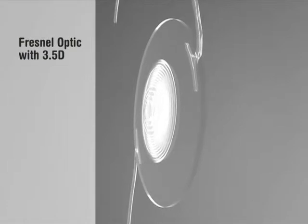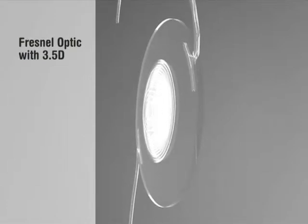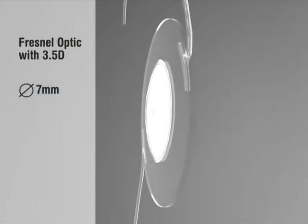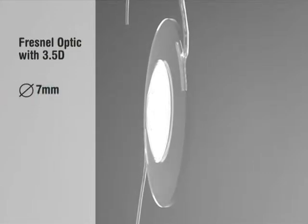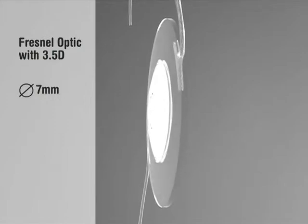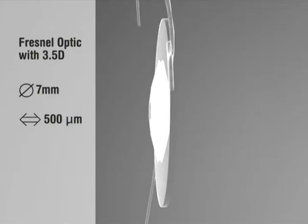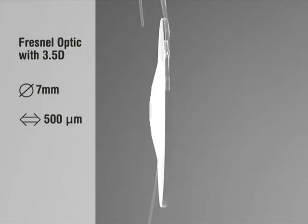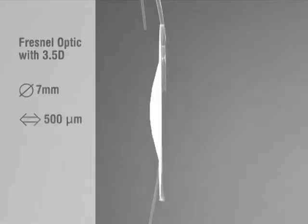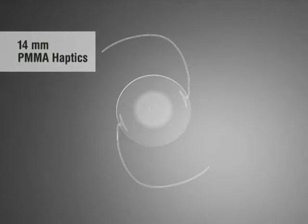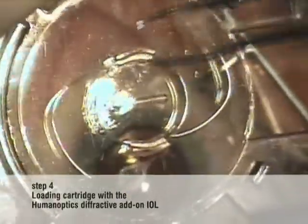This special add-on IOL does not behave like a capsular bag IOL placed in the sulcus by accident, but is specially designed for the sulcus. The 7 mm optic is big enough to prevent iris capture, and the silicone body is very thin — around 500 microns — and rounded to avoid any iris chafing or pigment dispersion. The 14 mm PMMA haptics fit into every sulcus and secure a perfect centration of the diffractive element.